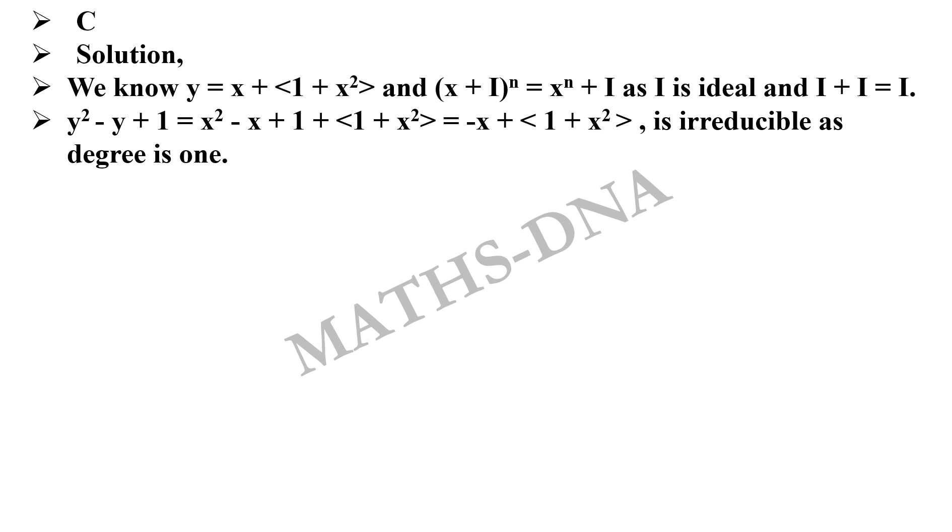For the first statement, y² - y + 1 = x² - x + 1 + <1 + x²>, which simplifies to -x + 1 + <1 + x²>, which is irreducible as degree is one. So the first statement is correct that y² - y + 1 is irreducible.